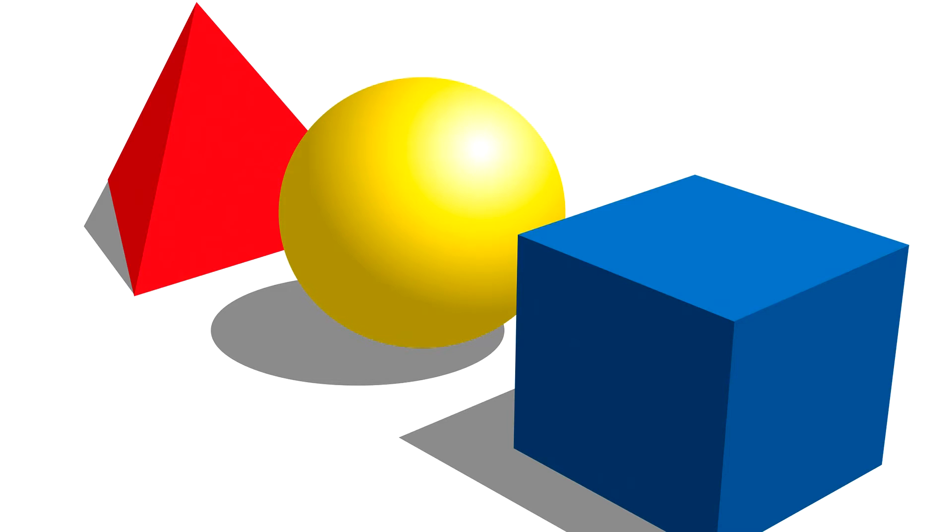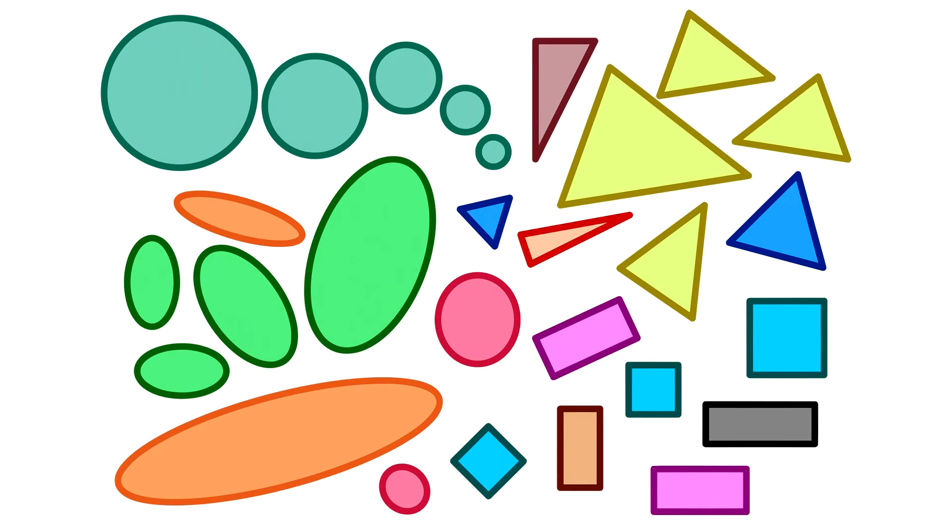Geometric shapes with only straight edges are called polygons. Circles and other shapes with curves are not polygons. It is fun to play with different geometric shapes.